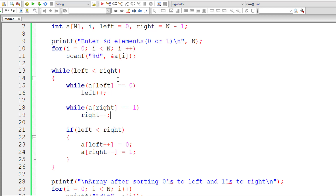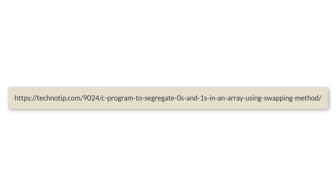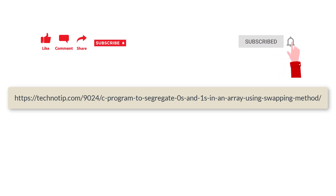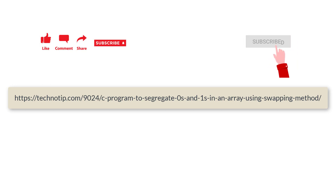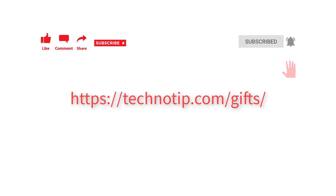This is how we segregate zeros to the left and ones to the right of an array using the swapping method. Please visit the link in the description for source code, notes, and discussion. Stay subscribed to our YouTube channel, share this video on social media, like the video, and happy Guru Purnima to everyone. Thank you.